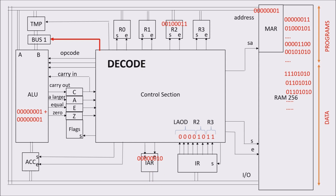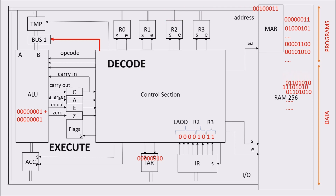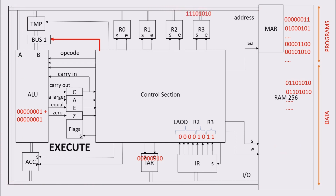Once the instruction in steps 4, 5, and 6 is decoded, we start the execute part. We have first to put the address in R2 on the bus to MAR for selecting the right RAM cell. Secondly, we put on the bus the RAM cell content and we load it on R3. This is how everything should work, but now we have to design the proper circuit.